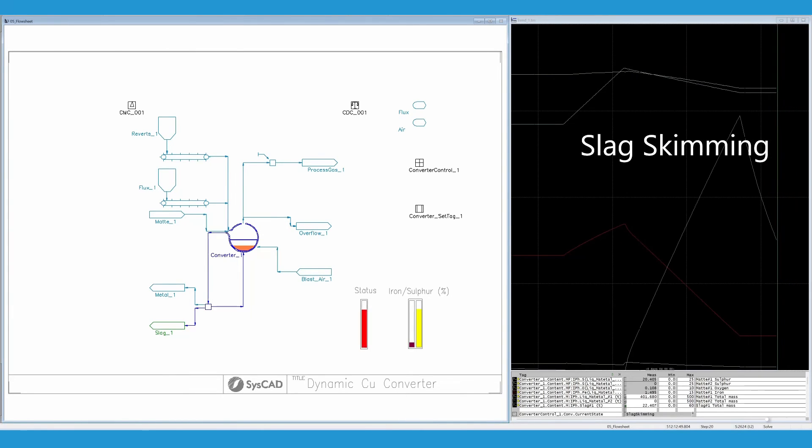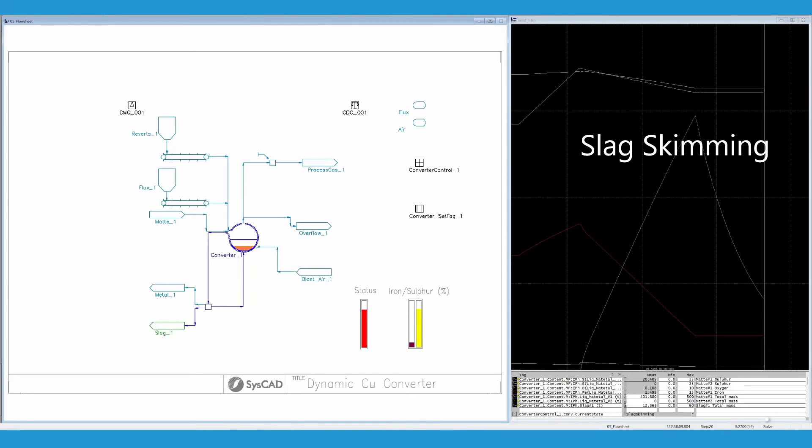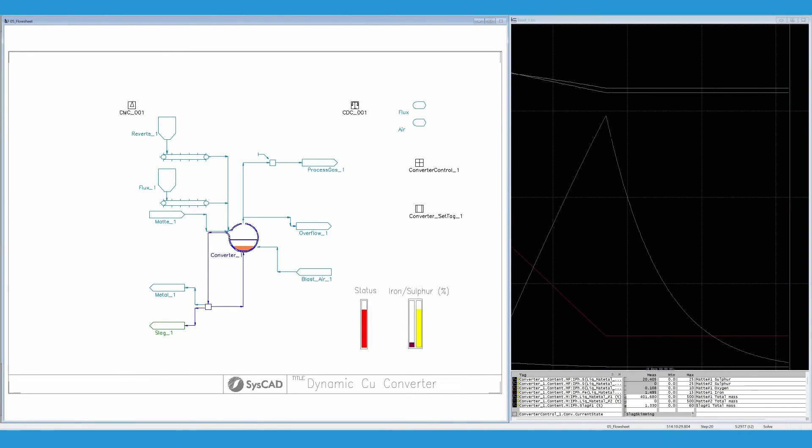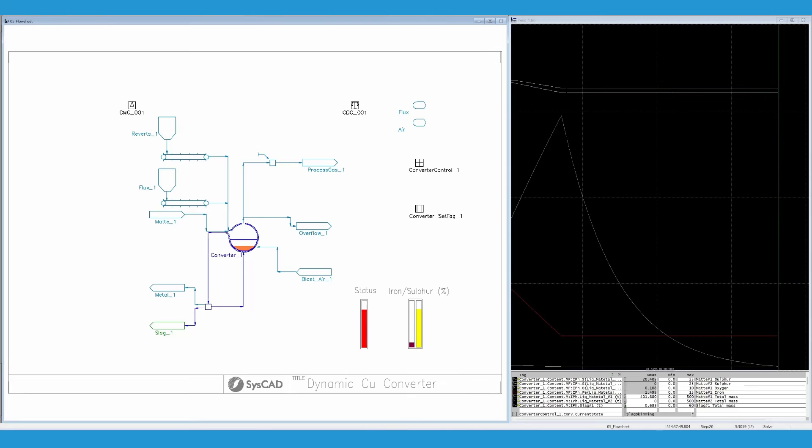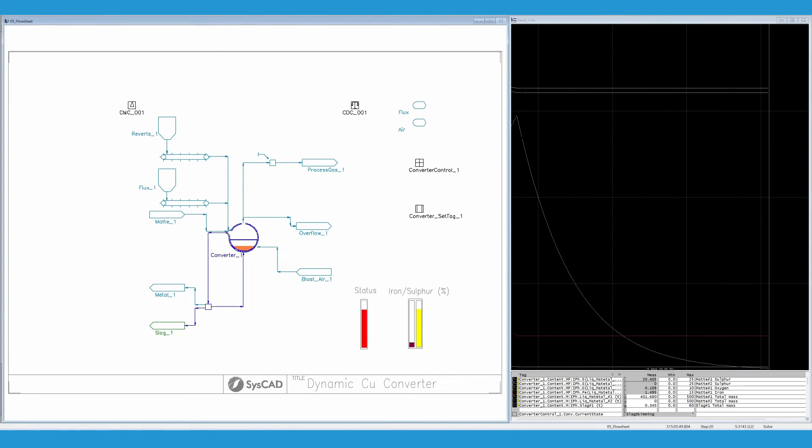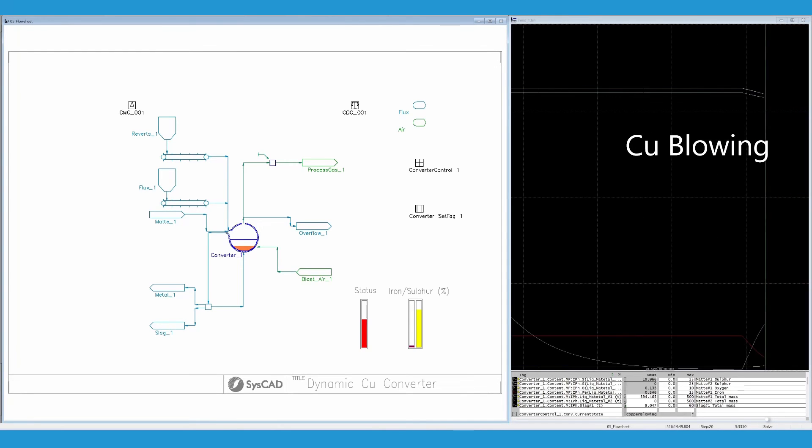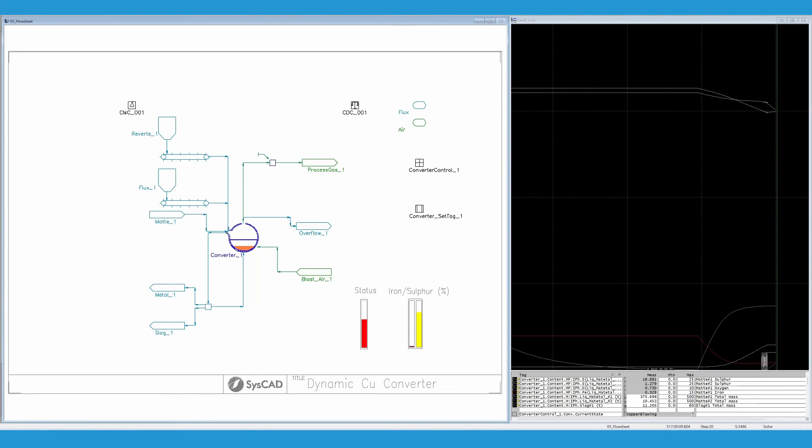Before the last slag blow, the converter receives one additional furnace matte ladle, bringing the total amount of matte inside the converter to its highest level. The endpoint for the third slag blow was set to 1.5 percent, and due to the large amount of matte in the vessel, this results in a longer slag blow and amount of slag generated. At this point, the slag is removed in preparation for the copper blowing. The converter mainly contains matte at 1.5 percent iron, 20.4 percent sulfur, and 0.1 percent oxygen.